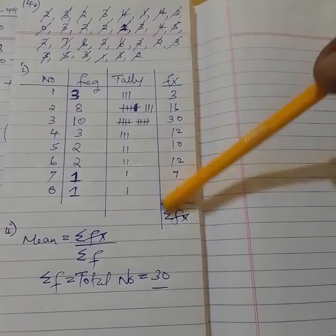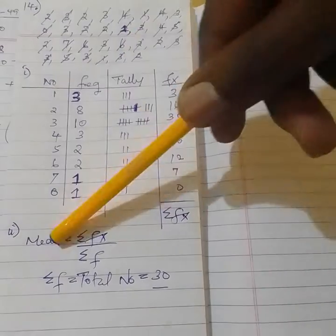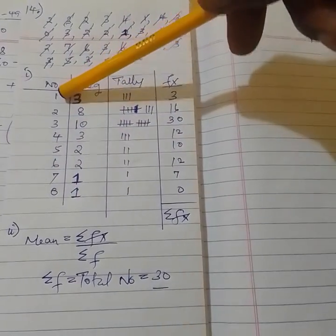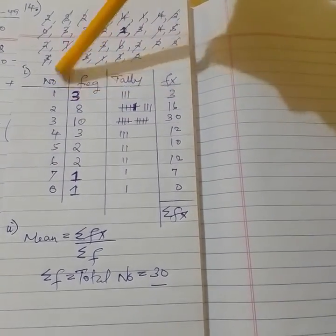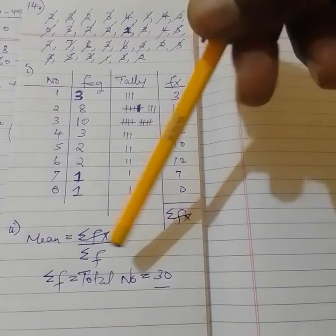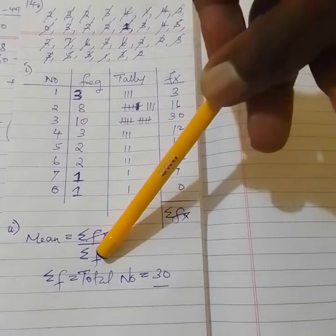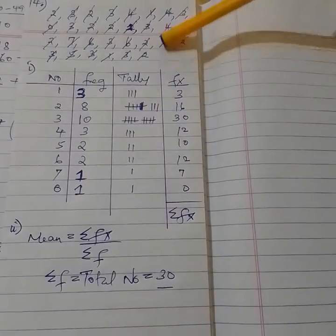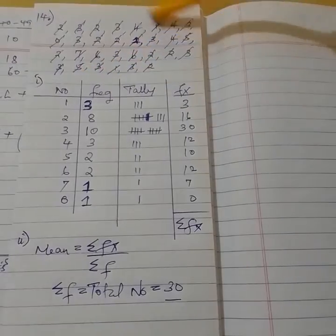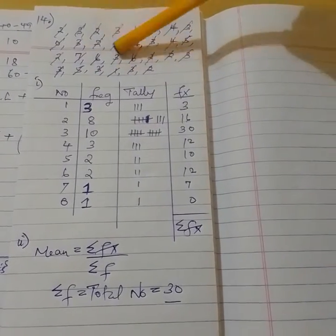So you'll have to create another column, fx, where you take the frequency, multiply by their corresponding points. So this one is 3, this one is 16, and so on. Then you add, you get the sum of fx, then divide by f. Or you just add the data manually, then you divide by the total number of items.